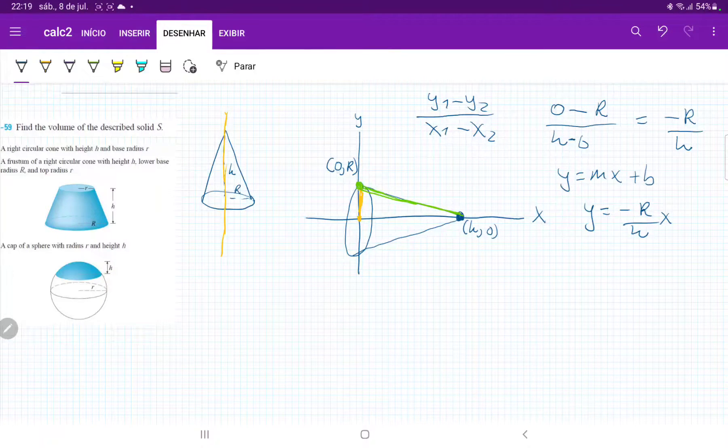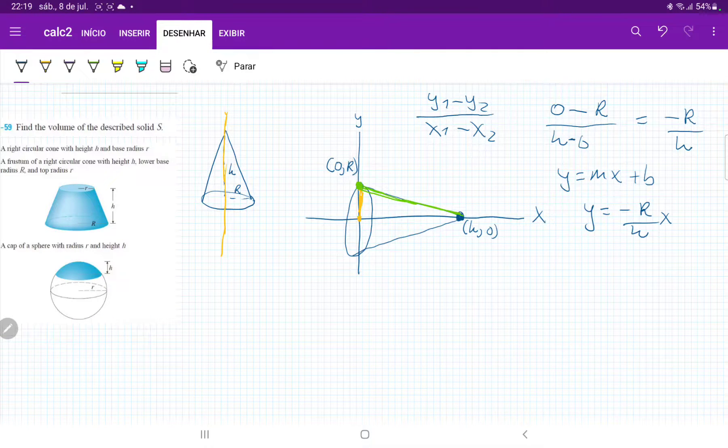And our intercept is just the point where it crosses our y-axis, which is the point r. So plus r. Now we have an expression for this green line that connects these two points. And that will make it easy for us to set up our integral.